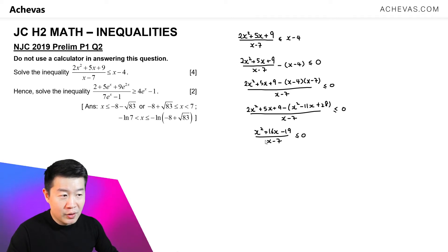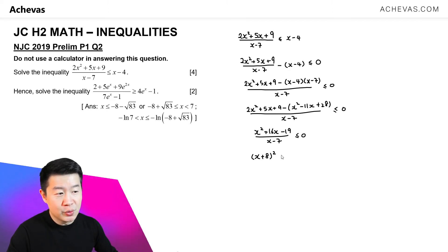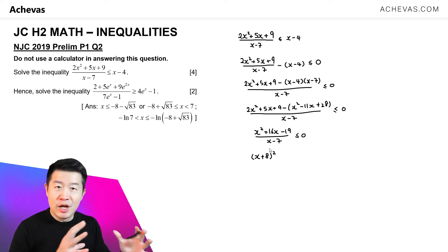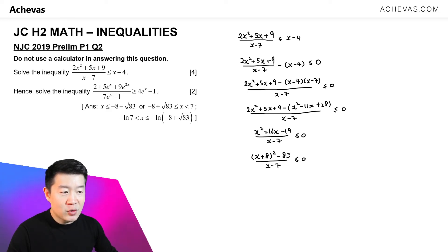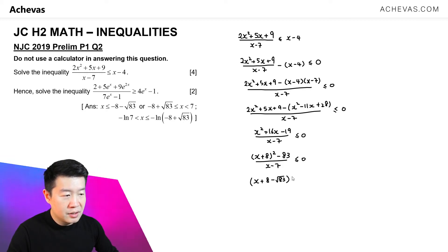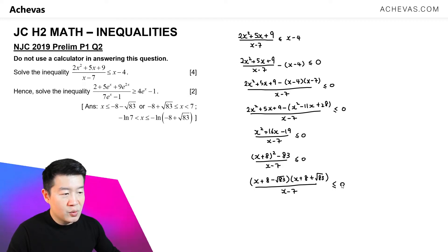I'm going to do completing the square. You can also use the quadratic formula to find the roots, then factorize using those roots. Using completing the square, the numerator becomes x plus 8 squared minus 83, which can be re-expressed as a difference of squares — that is, square root of 83 squared — allowing us to factorize the numerator into x plus 8 minus square root of 83, times x plus 8 plus square root of 83, divided by x minus 7, less than or equal to 0.